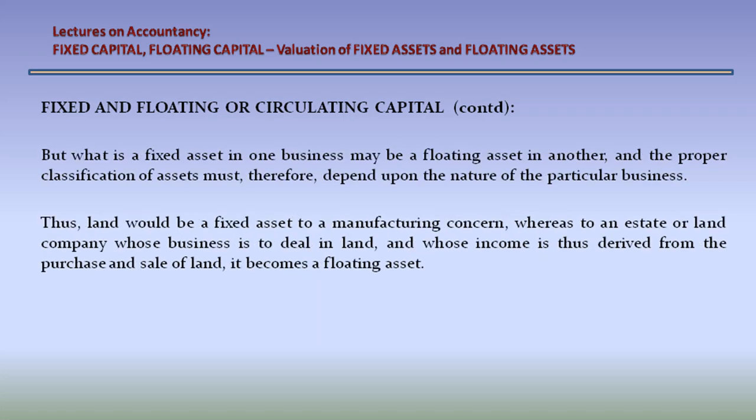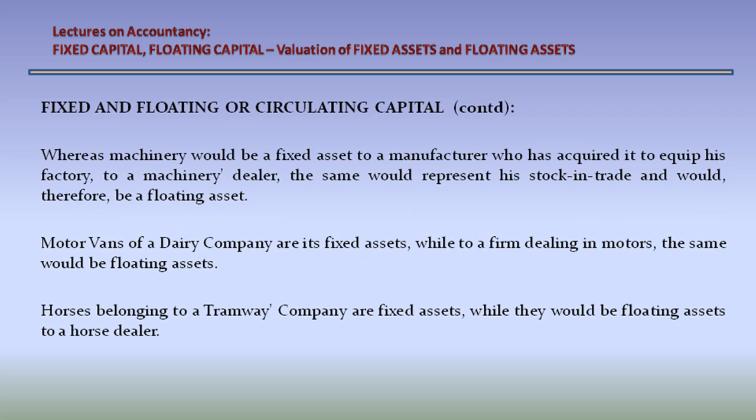But what is a fixed asset in one business may be a floating asset in another, and the proper classification of assets must therefore depend upon the nature of the particular business. Thus, land would be a fixed asset to a manufacturing concern, whereas to an estate or land company whose business is to deal in land and whose income is derived from the purchase and sale of land, it becomes a floating asset. Likewise, machinery would be a fixed asset to a manufacturer who acquired it to equip his factory, but to a machinery dealer, the same would represent stock in trade and would therefore be a floating asset.